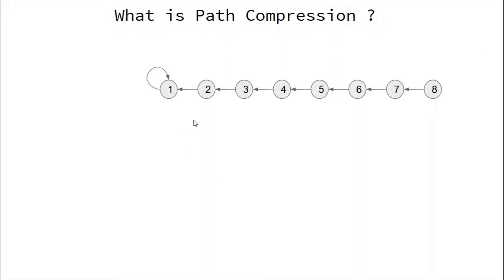Path compression is the concept that instead of pointing to other intermediate nodes, each node should point directly to the actual root parent. We can see that almost all nodes except node 2 are pointing to some intermediate node rather than to node 1, the actual root. With path compression, when find(8) is called, it makes recursive calls down to 1, which returns 1 to 2, then 2 to 3, and so on.